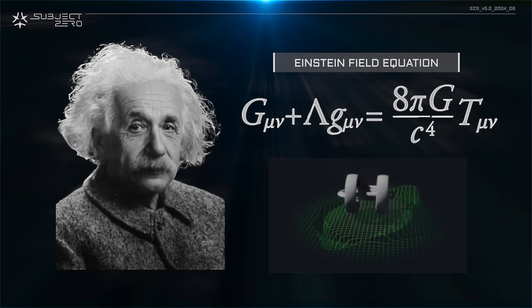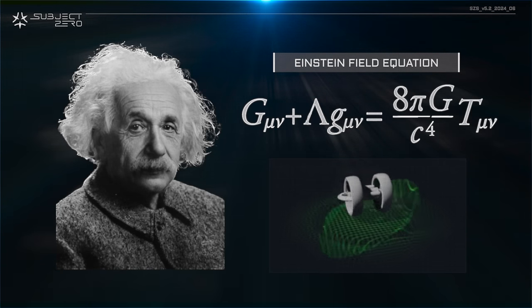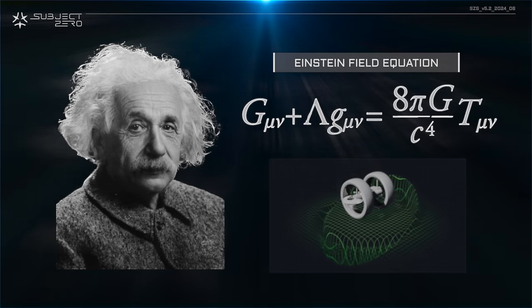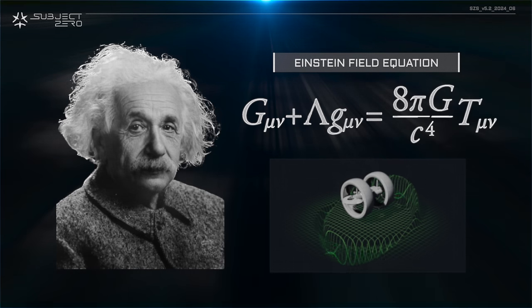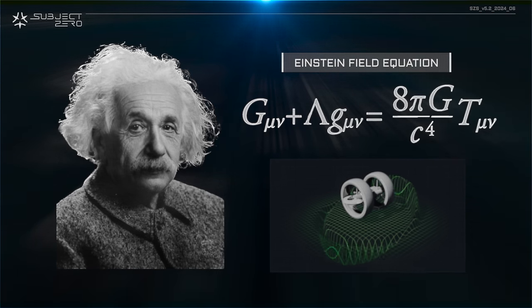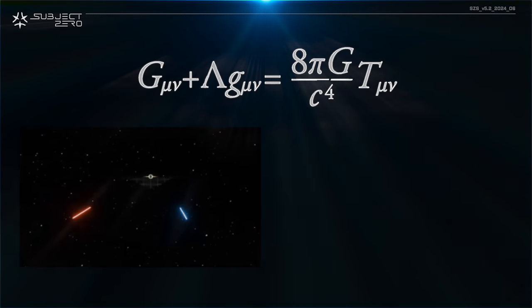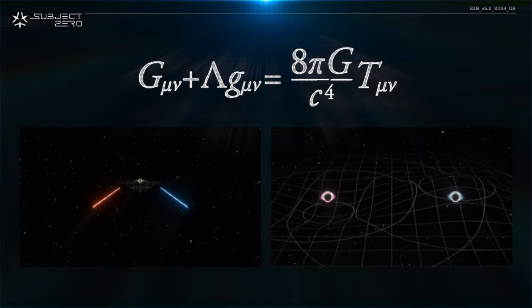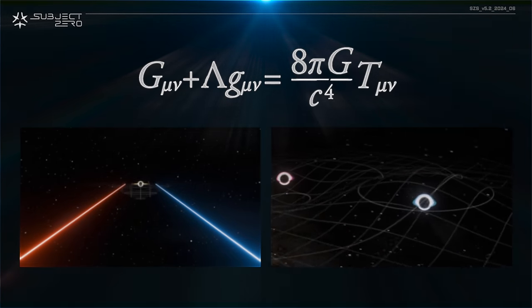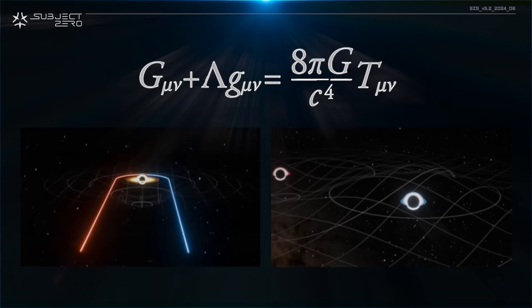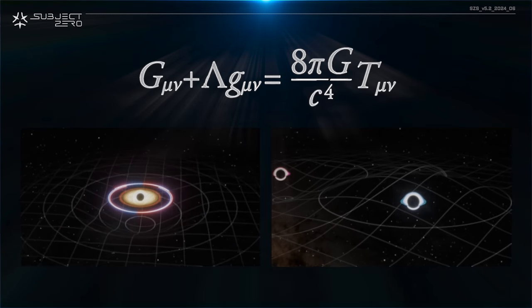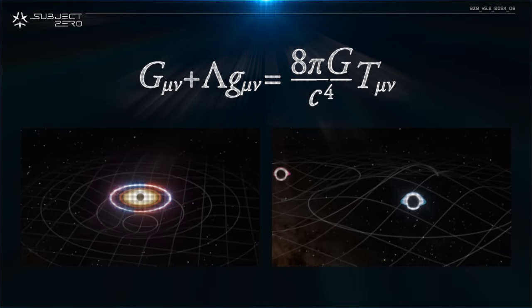In the field equation, the right side represents the distribution of mass, while the left side, you have the calculation of the geometry of spacetime. In other words, spacetime tells matter how to move, and matter tells spacetime how to curve. The field equation is very complex to work with and requires extensive computational power.